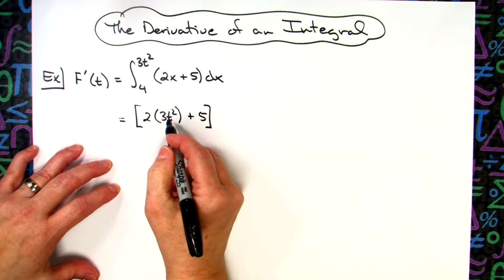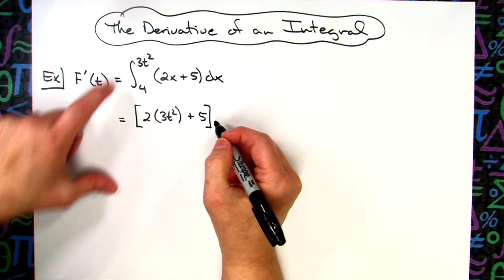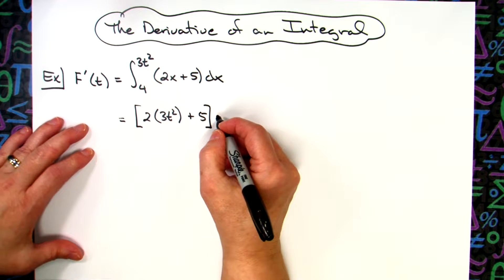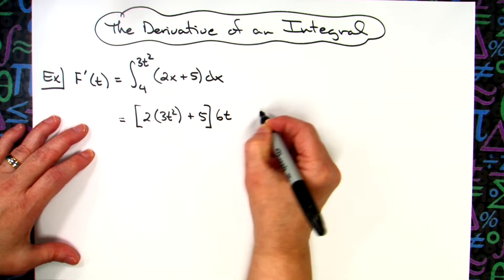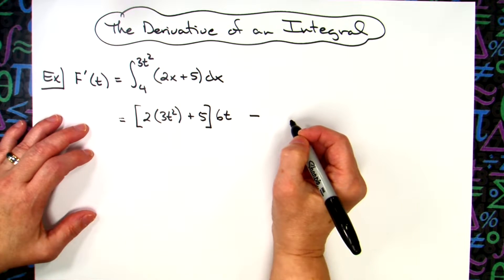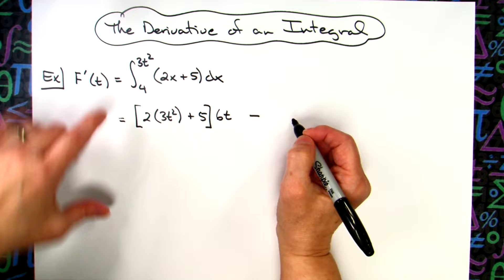After you plug that upper limit in, then you are going to take the derivative of that upper limit. So the derivative of the upper limit there is going to be a 6t. This is the Fundamental Theorem of Calculus here.